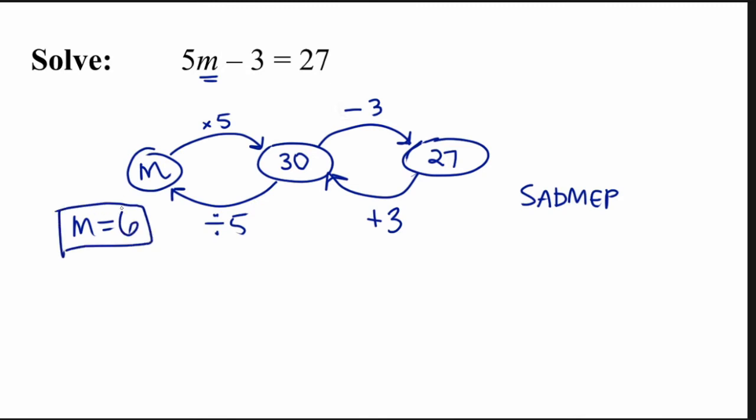And we should always take a moment to plug this answer back in and make sure that it actually works. So 5 times 6, because that's M minus 3 should equal 27. 5 times 6 is 30 minus 3 does in fact equal 27. So our answer is correct.